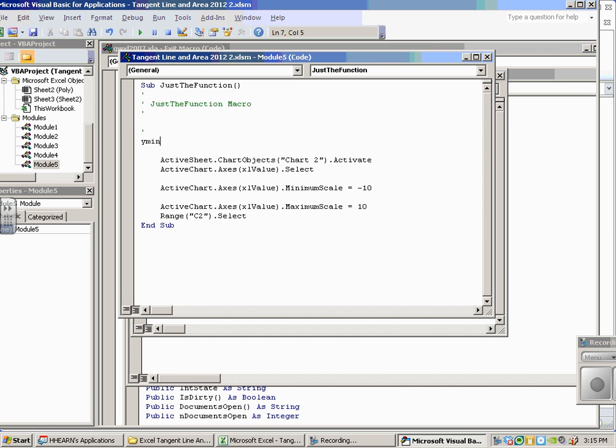And, I'm going to type in Ymin equals. I'm just calling Ymin a variable. I could just as easily call it A equals. Ymin equals cells. C-E-L-L-S. Left parenthesis.